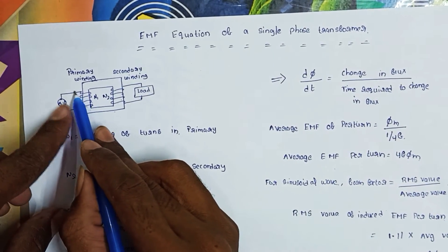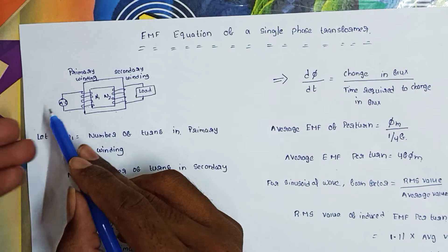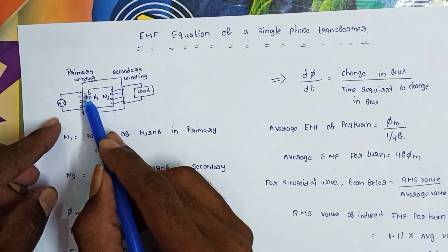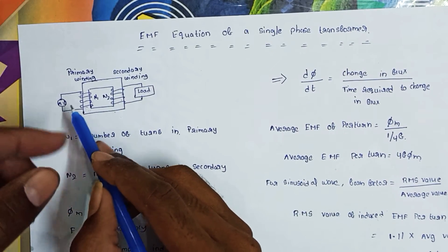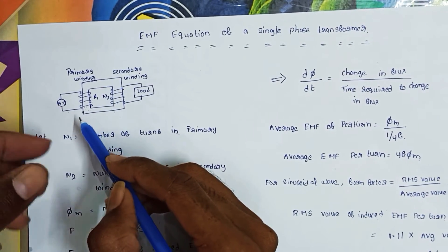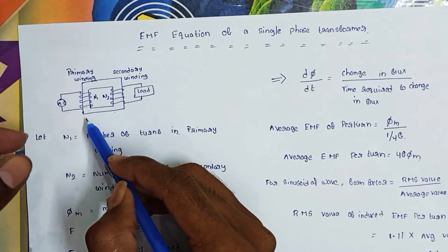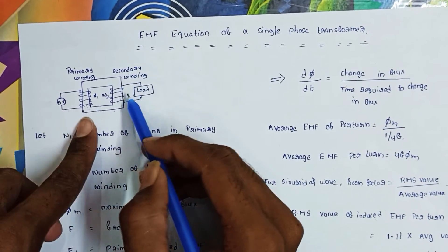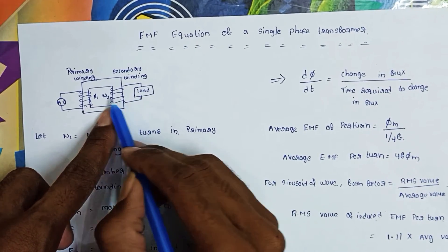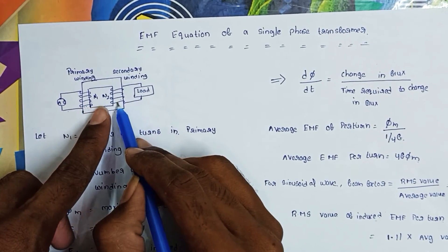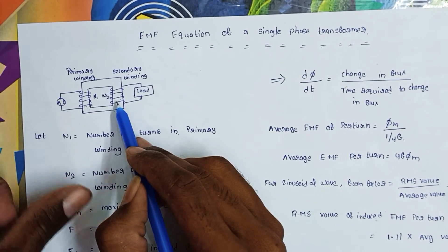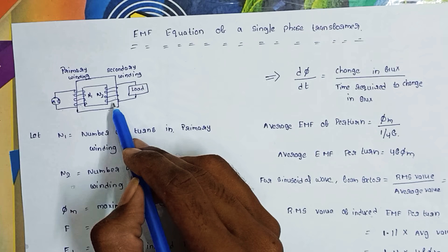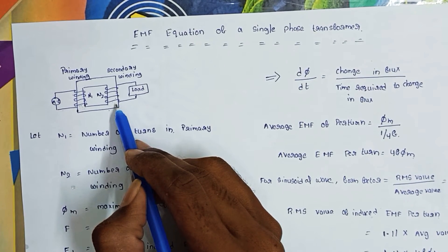The alternating current circulates and is linked with the primary winding, so the primary winding induces an EMF. The self-induced EMF in the primary winding is E1. Next, the flux is linked with the secondary winding through a common magnetic core, and it produces an EMF E2 in the secondary winding, called mutually induced EMF.